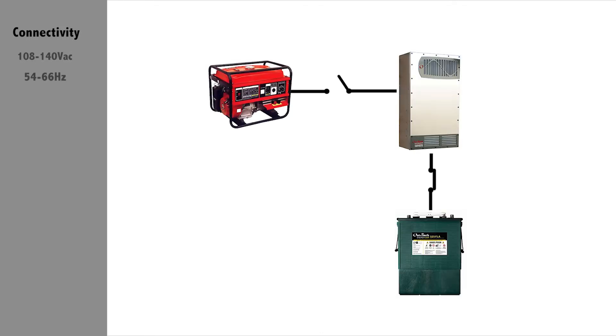First up is connectivity. For the inverter to accept the AC source, the generator must meet the following specifications: voltage range 108 to 140 volts AC per phase, frequency range 54 to 66 hertz. When these conditions are within the acceptable limits, the inverter will accept the generator power.